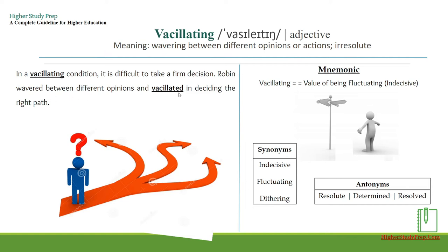The mnemonic for 'vacillating': think of 'value of being fluctuating or indecisive.' Synonyms include: indecisive, fluctuating, dithering. Antonyms can be: resolute, determined, or resolved.